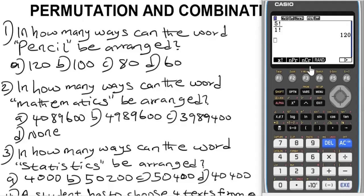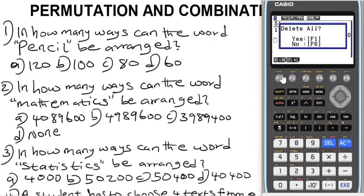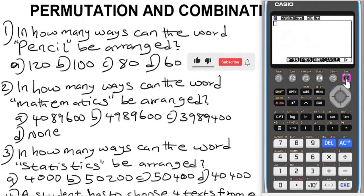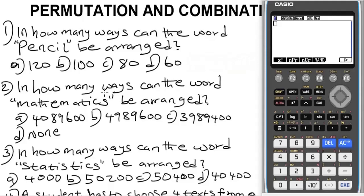Now let's go to question 2. It says: in how many ways can the word 'mathematics' be arranged? The word mathematics has both distinct letters and duplicated letters.